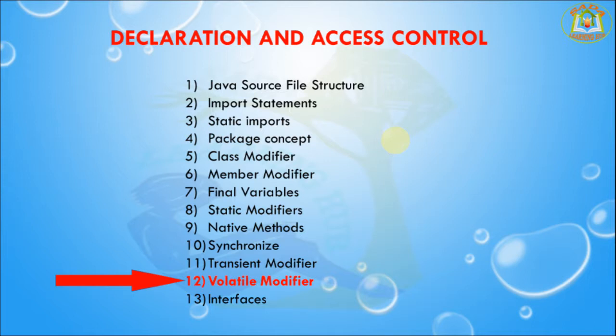All intermediate modifications performed by a thread will take place in the local copy instead of the master copy. Once the value is finalized before the thread terminates, that final value will be uploaded into the master copy. The main advantage of volatile is we can resolve data inconsistency problems, but creating and maintaining a separate copy for every thread increases programming complexity and affects performance. Hence if there is no specific requirement, it is never recommended to use volatile, and it is almost outdated.